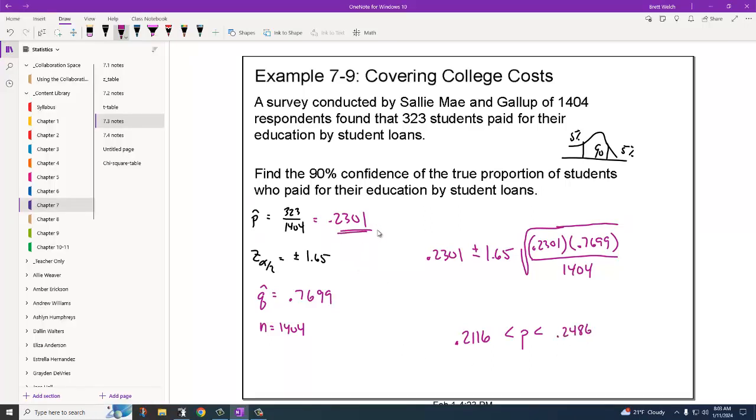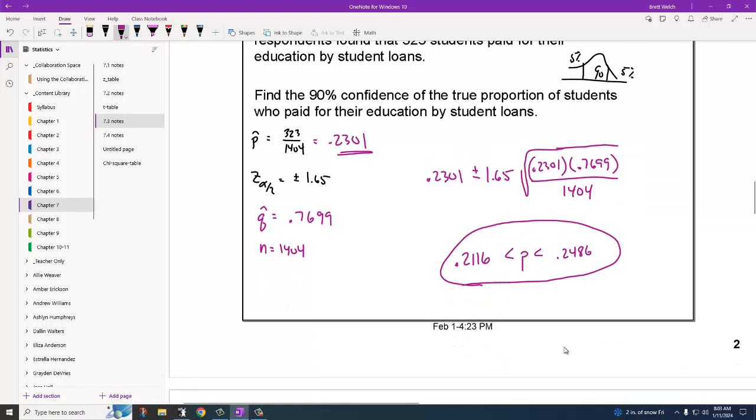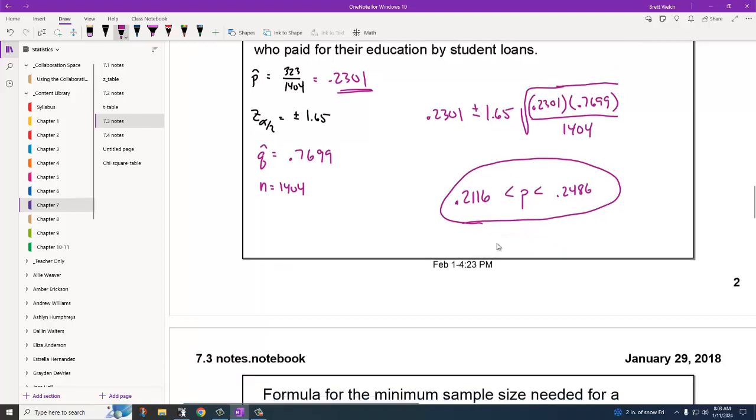While the estimate was 23%, we know that the true population proportion is somewhere between 21% and 24%, almost 25%. That's where we'd expect it to be, with the 90% confidence that it's in there. If I want more confidence, that region's going to get bigger. If you want 99%, it's just going to widen.